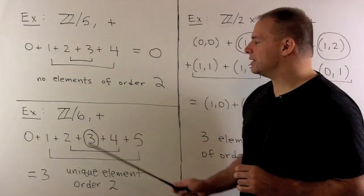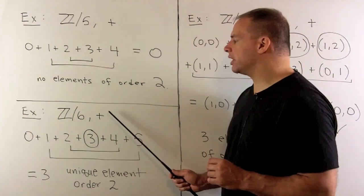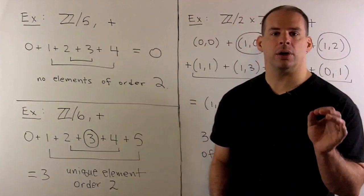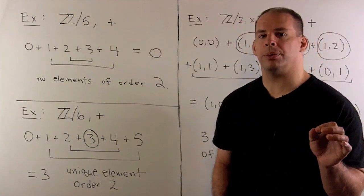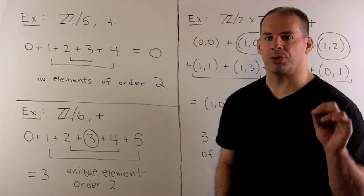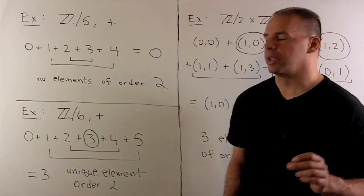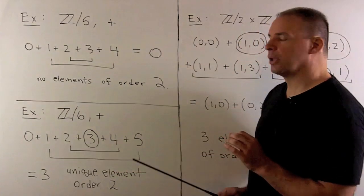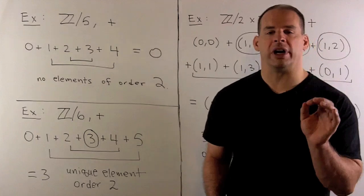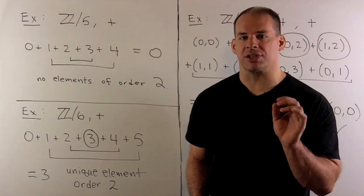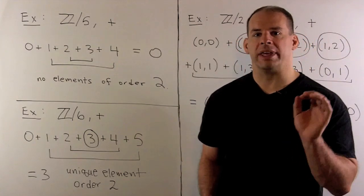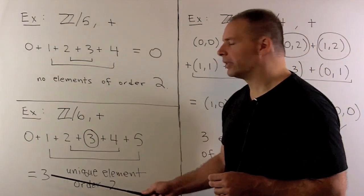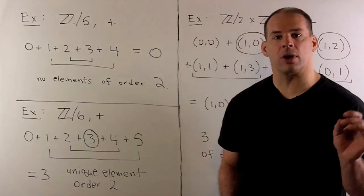Next, consider Z mod 6 under addition. Here we have a unique element of order 2, which is 3. We take the sum, I get 15, which goes to 3 under mod 6 addition. So we get our unique element of order 2, and that agrees with our result.